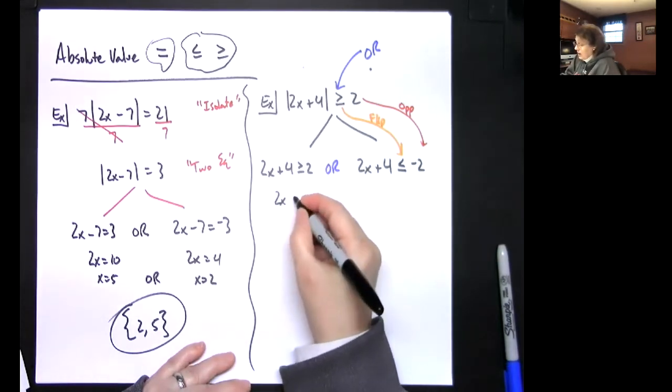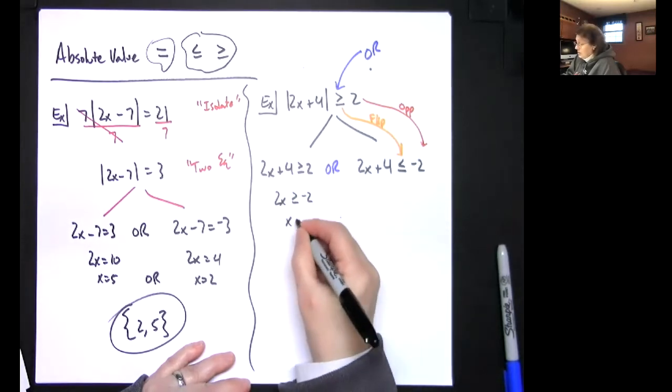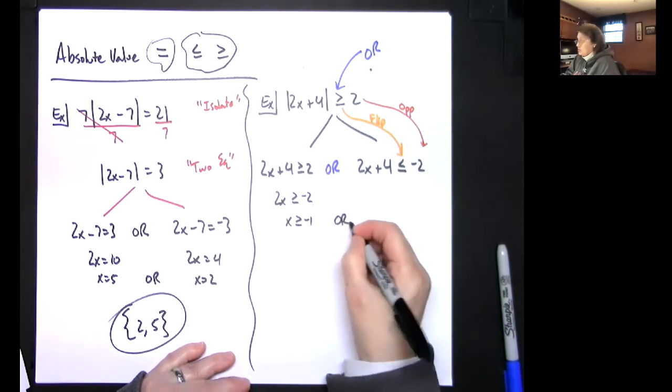So let's go ahead and do this real quick. We're gonna have 2x greater than or equal to, if I minus 4 will give me negative 2, x is greater than or equal to negative 1. Check me on this, I don't know if I'm going to make a mistake here.